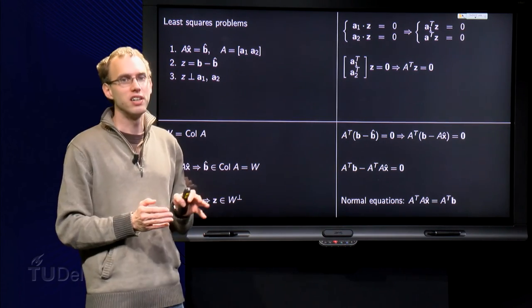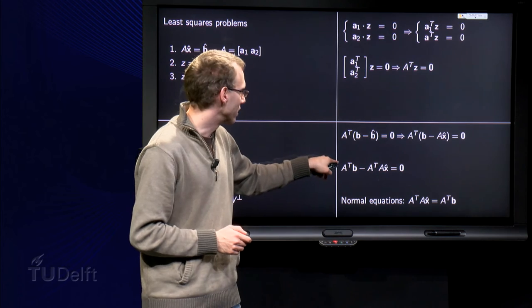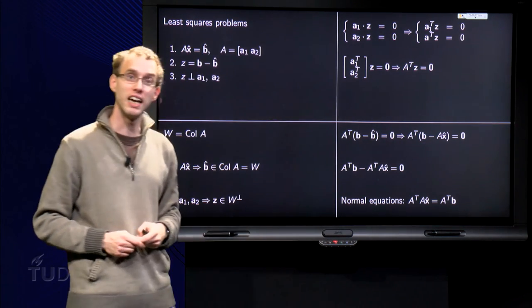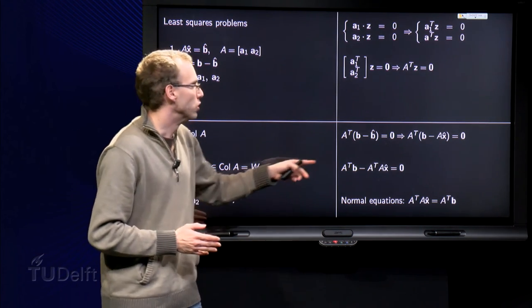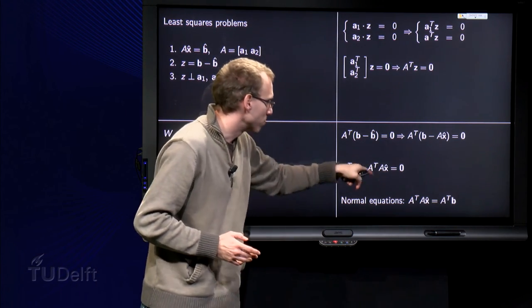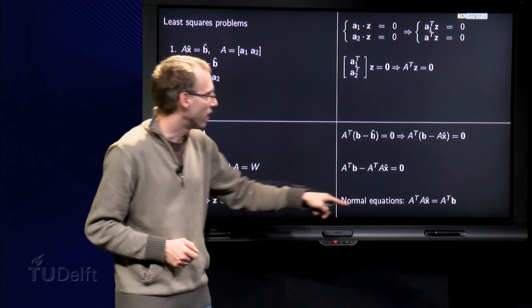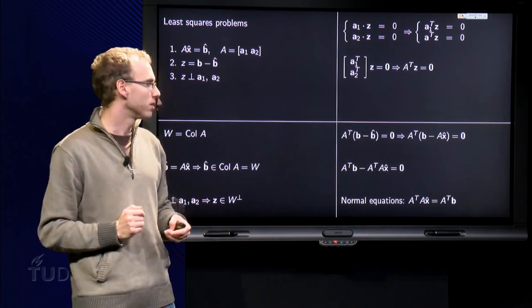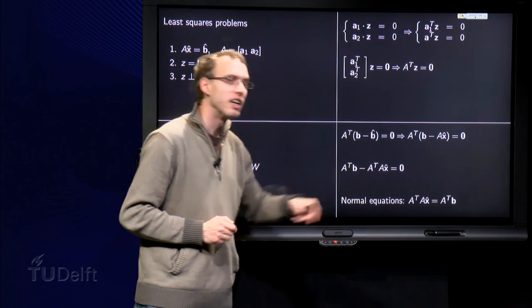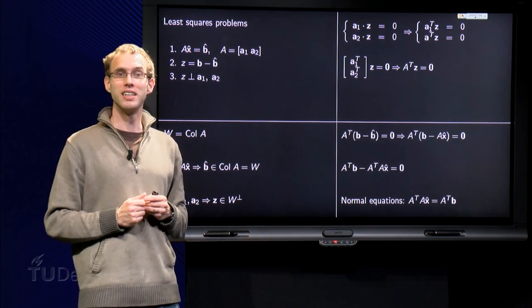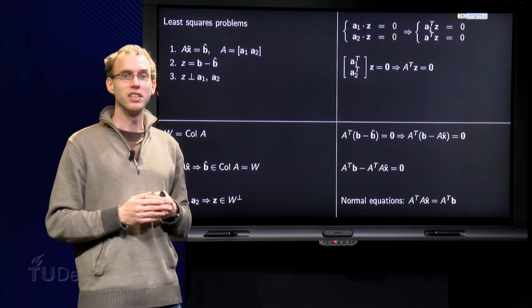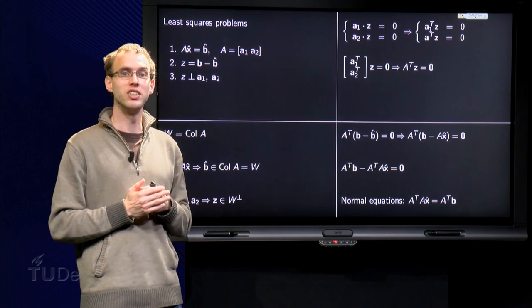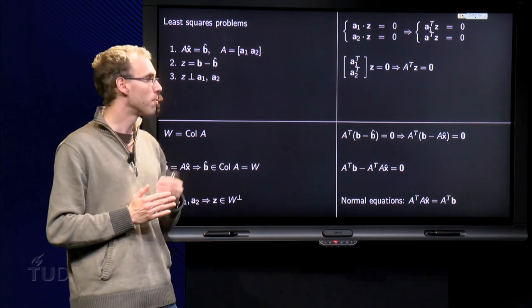Usually you work out the brackets and rewrite this equation a bit, so we write A transpose times b minus A transpose A times x hat equals zero, and usually you put this term to the right hand side, and you finally obtain A transpose times A times x hat equals A transpose times b. So we have an equation where only x hat is present, and this equation yields some linear equations which are called the normal equations which will allow us to find x hat.